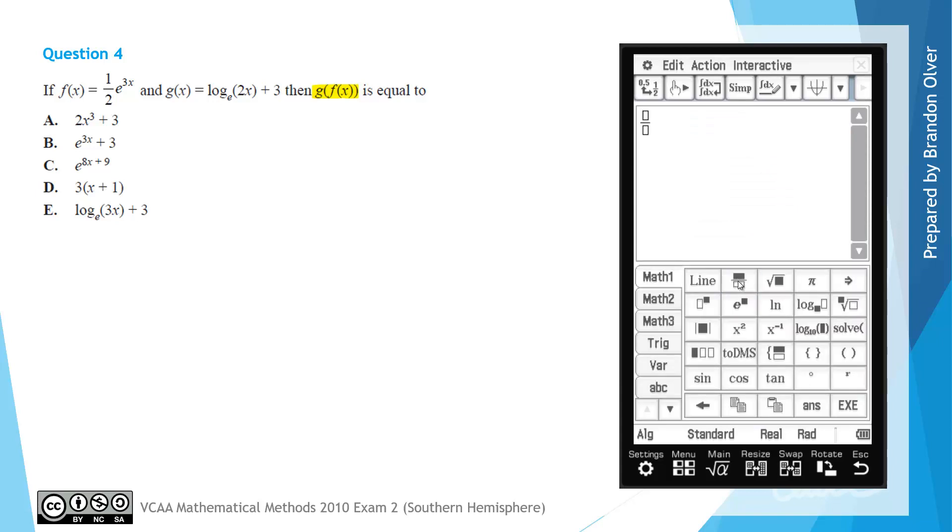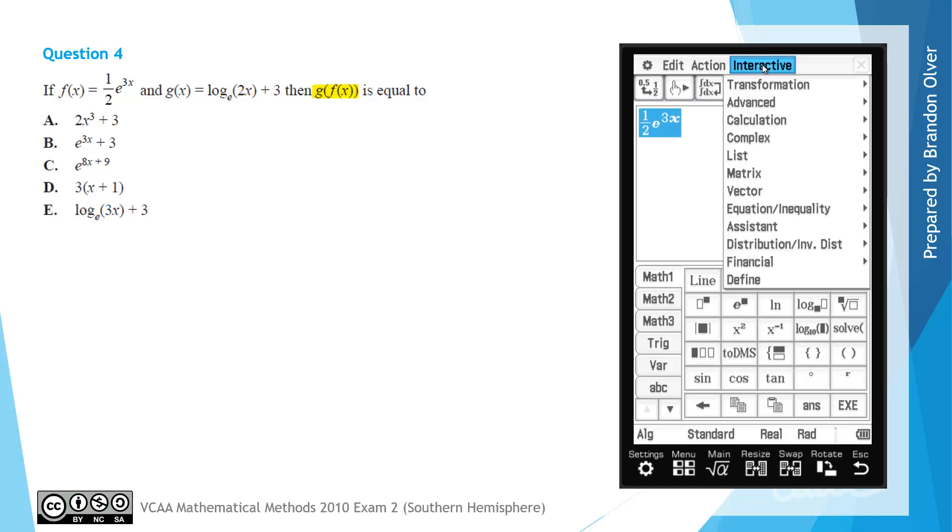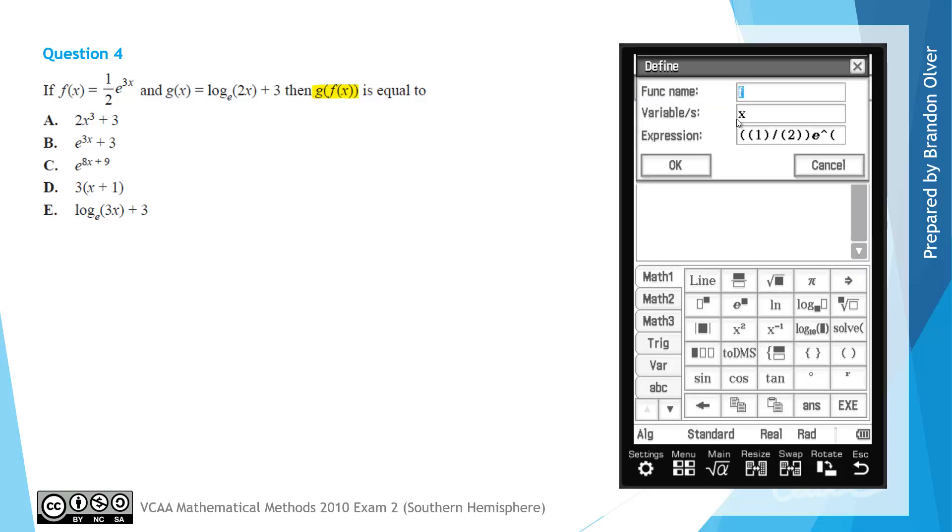And we want to type in the rule for f of x and g of x. So for f of x, we have 1 half multiplied by e to the power of 3x. And that's got to be in the power, so just make sure it is in there. And then we can highlight that and go Interactive Define. And we can define that as f of x. So we can just hit OK for this one.